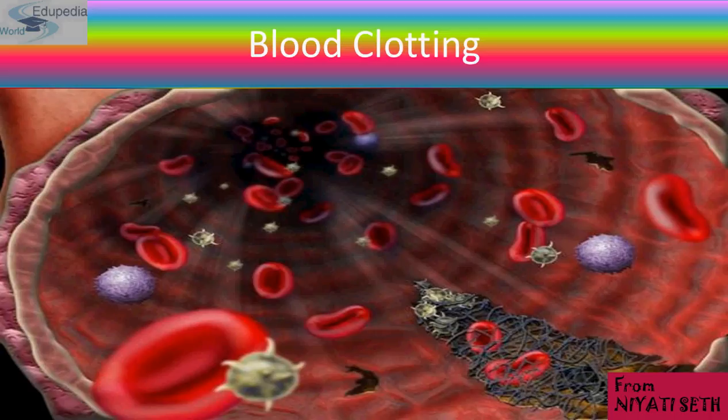Blood clotting is a key point of control for many processes. Blood clotting is a hemostasis — it is an important protective mechanism of the body. It seals wounds; for example, after an injury, it stops the bleeding and starts the healing process.